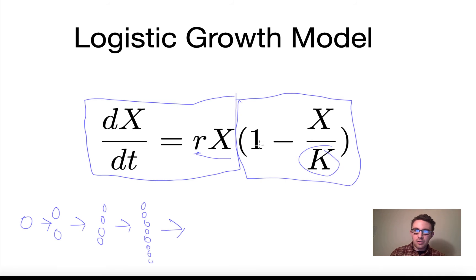then this whole term will become a smaller and smaller fraction until when X is actually at the carrying capacity, this whole term will just be 0 and we'll have 0 times this term,